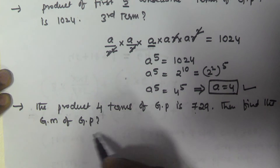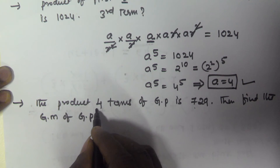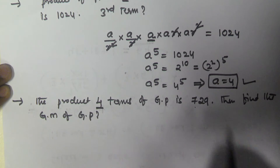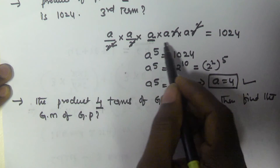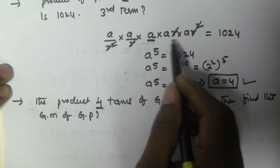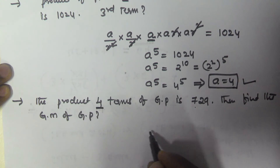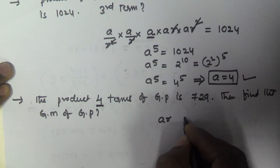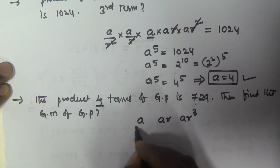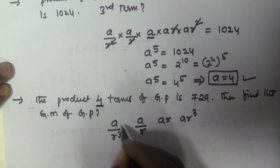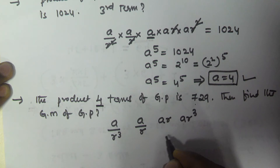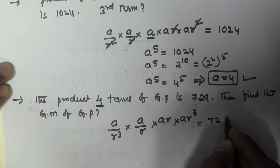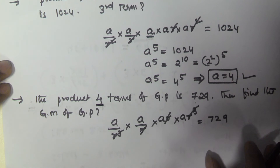Whenever an even number of terms are given, we ensure the common ratio between terms is R². So we take the four terms as A/R³, A/R, AR, and AR³. These four are in geometric progression, and according to the given question their product is 729. Multiplying: R³ and R³ cancel, R and R cancel, giving A⁴ = 729.